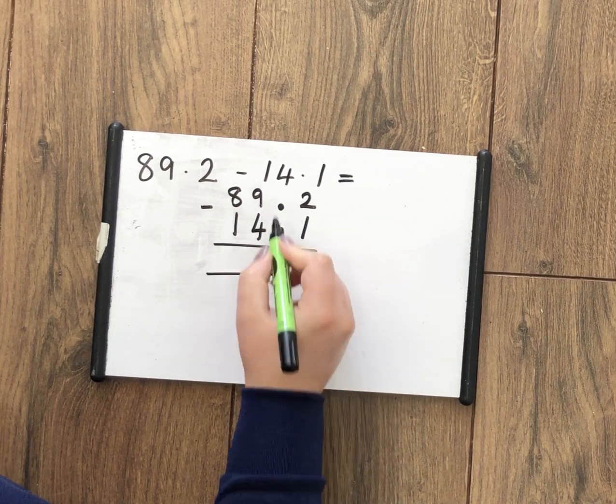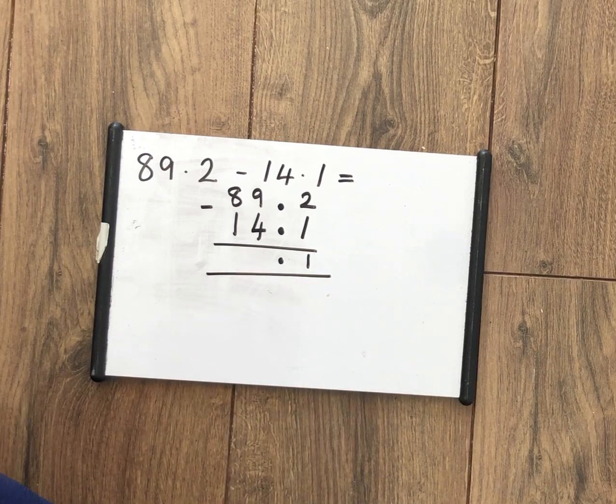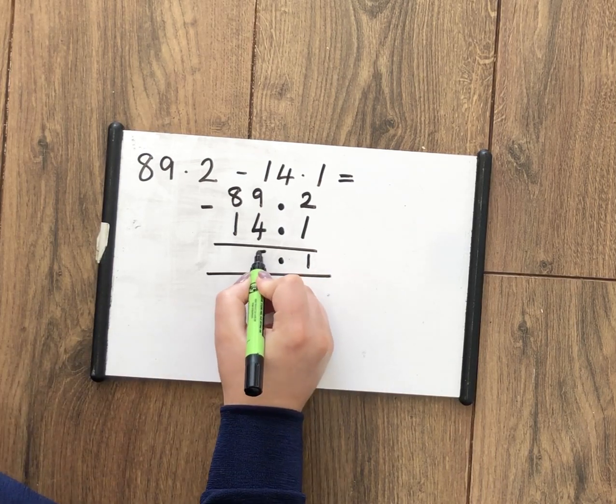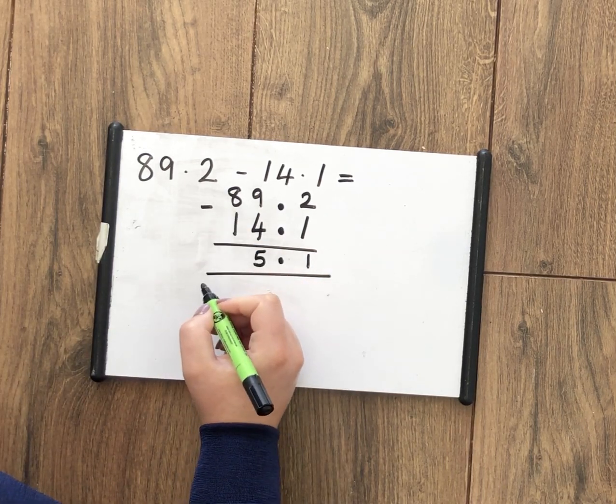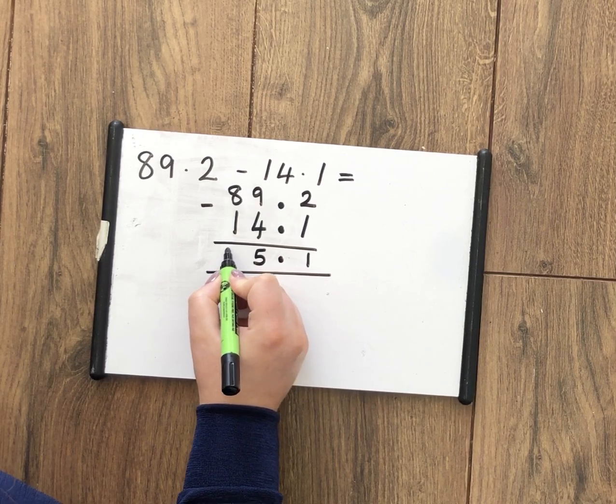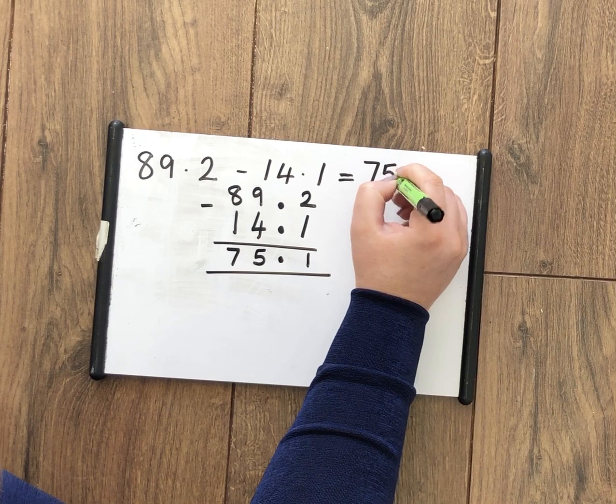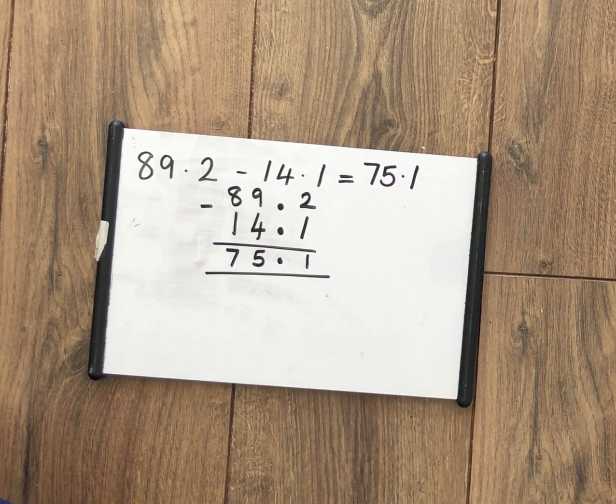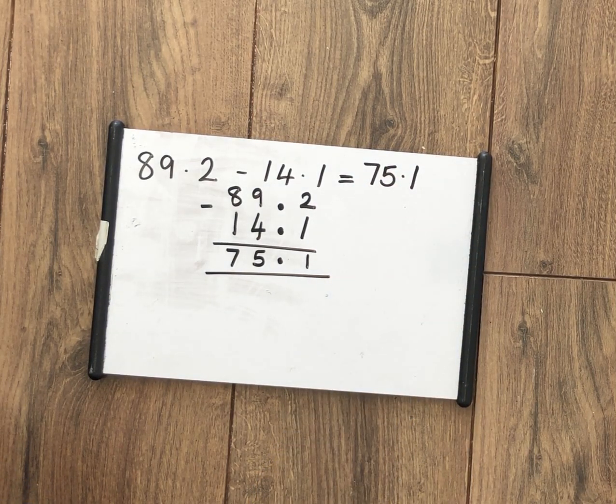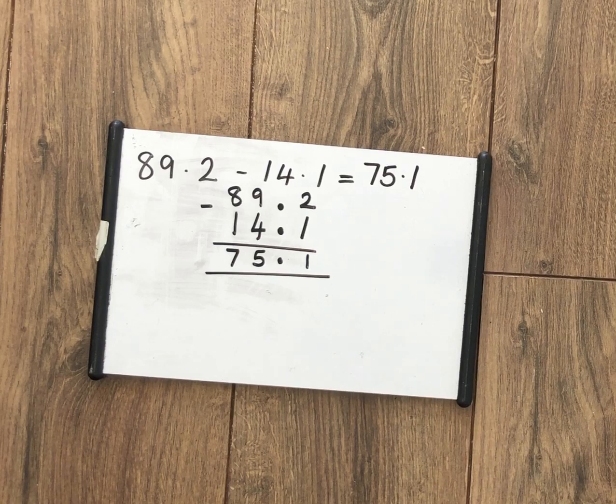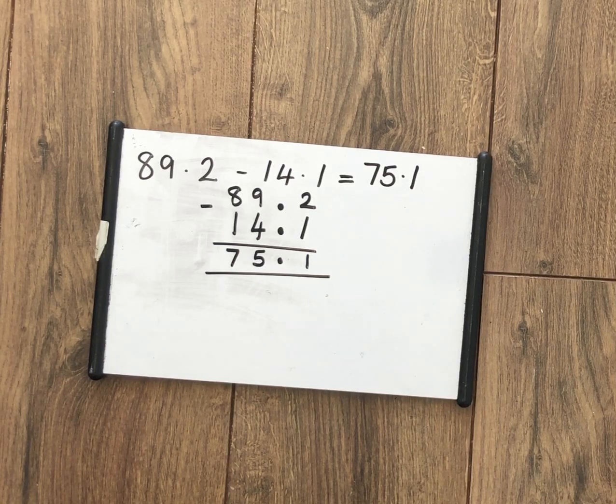So 2 take away 1 is 1. Decimal points always stay the same. 9 take away 4 is 5, 8 take away 1 is 7. That will end up being my final answer. So 89.2 take away 14.1 is 75.1.